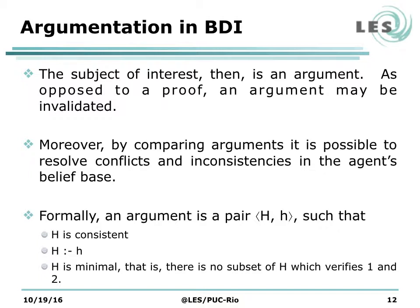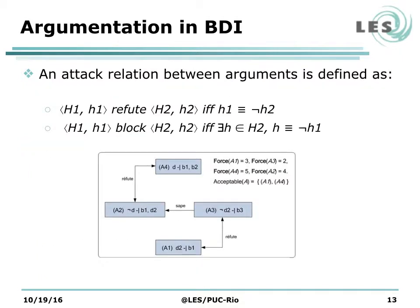Formally, an argument is a pair (H, h) such that H is consistent, H implies h, and H is minimal — that is, there is no subset of H which verifies conditions 1 and 2. An attack relation between a pair of arguments is defined as follows. Suppose we have two arguments, 1 and 2, represented as pairs (H1, h1) and (H2, h2). If the conclusion of the first argument, h1, represents the negation of the conclusion of the second argument, h2, then we have an attack relation of the type refute. This is shown in the figure, for instance between arguments 4 and 2, where the conclusions are d and its negation.